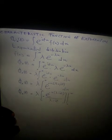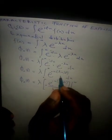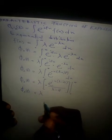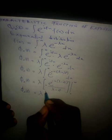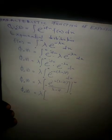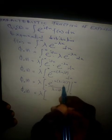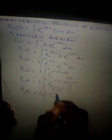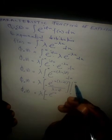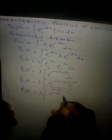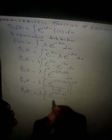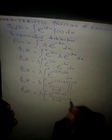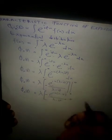Now substituting the limits. From here, phi subscript x of t equals lambda times the bracket. If we substitute infinity into x, we have minus exponential raised to the power minus infinity, multiplied by the quantity lambda minus i theta t, over lambda minus i theta t. The two negatives will give a positive.